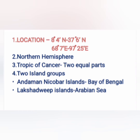The third factor is the Tropic of Cancer, that is 23 and a half degree latitude. It passes through India and divides India into approximately two equal halves. The fourth factor is that two island groups are also included in India — Andaman and Nicobar Islands in the Bay of Bengal and Lakshadweep Island.